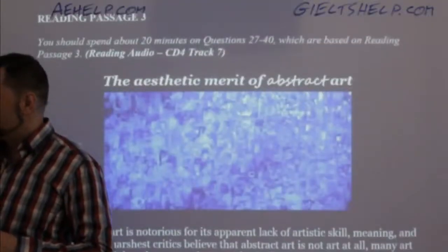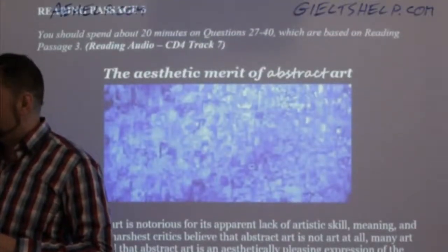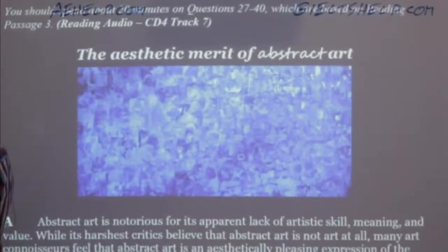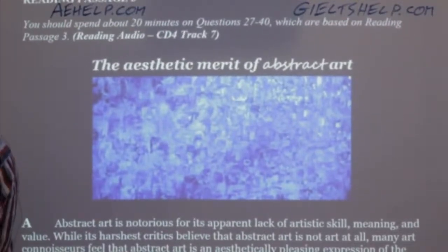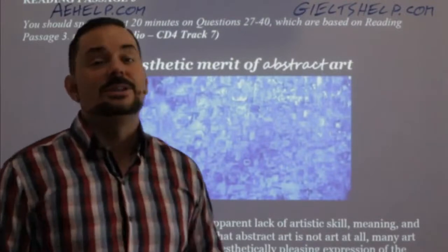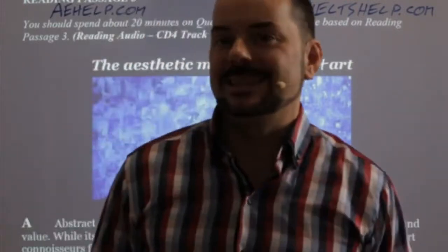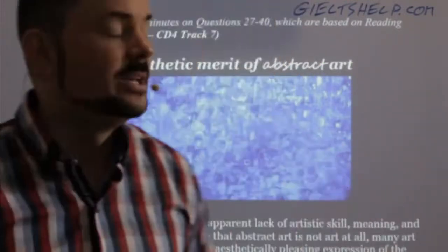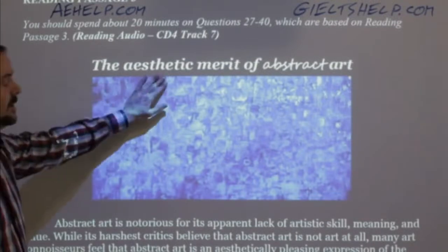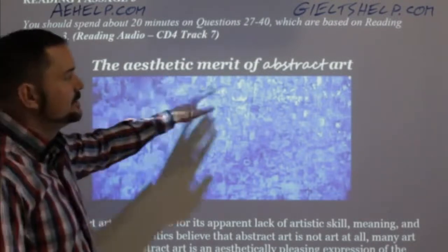So this is our reading passage for today and we'll get right into it. We'll talk strategy and I will explain to you exactly what you need to do to get that band nine. So here we have the title: The Aesthetic Merit of Abstract Art.